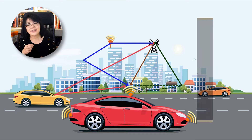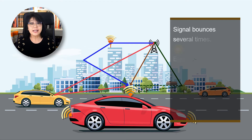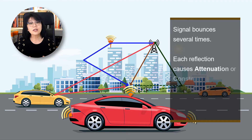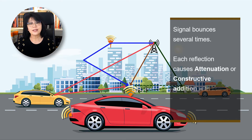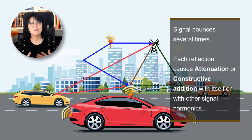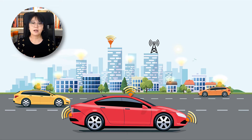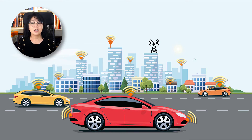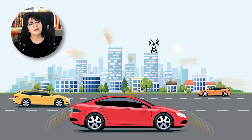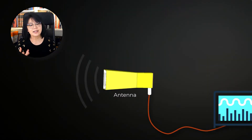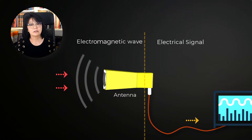Each time that signal is reflected, it can be attenuated, or it can constructively add with itself, or perhaps with a harmonic from another wireless signal. Here we show only two antennas, but as we know, there are going to be much more than this — this can be hundreds of signals, hundreds of users. Antennas transmit signals as an electromagnetic wave and convert them into an electric signal.